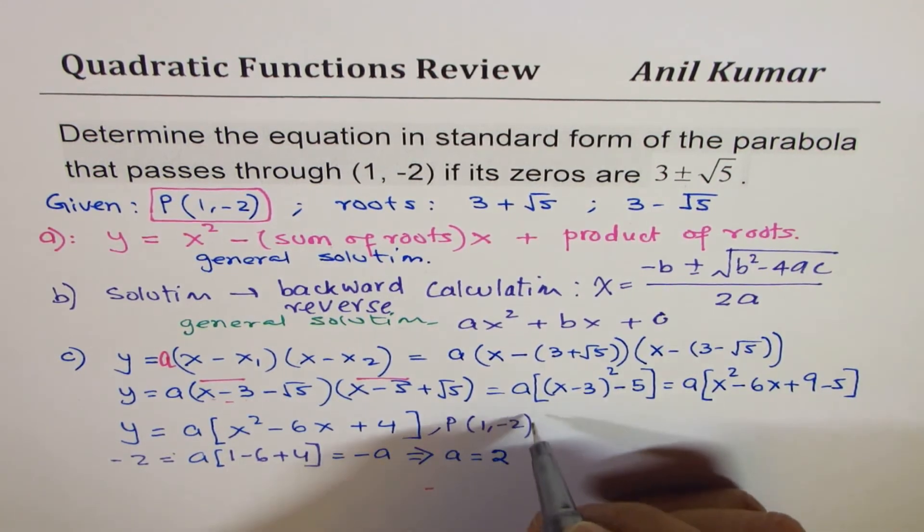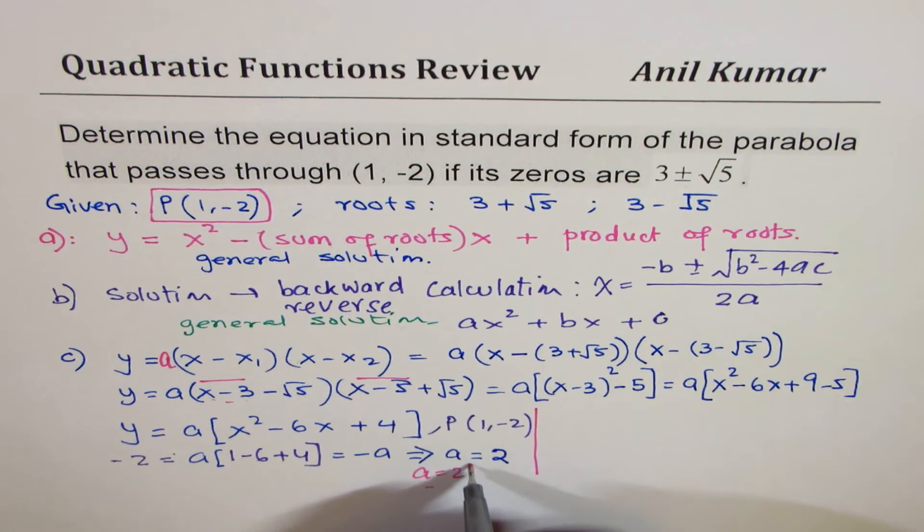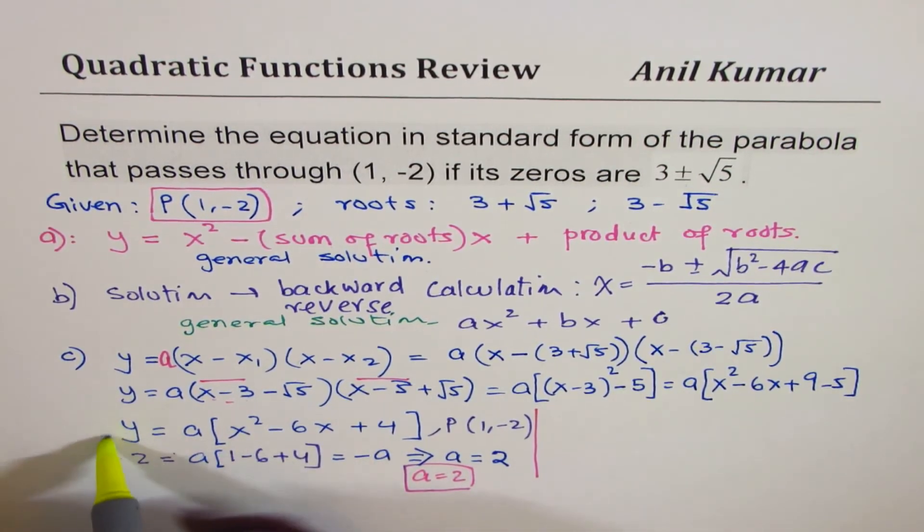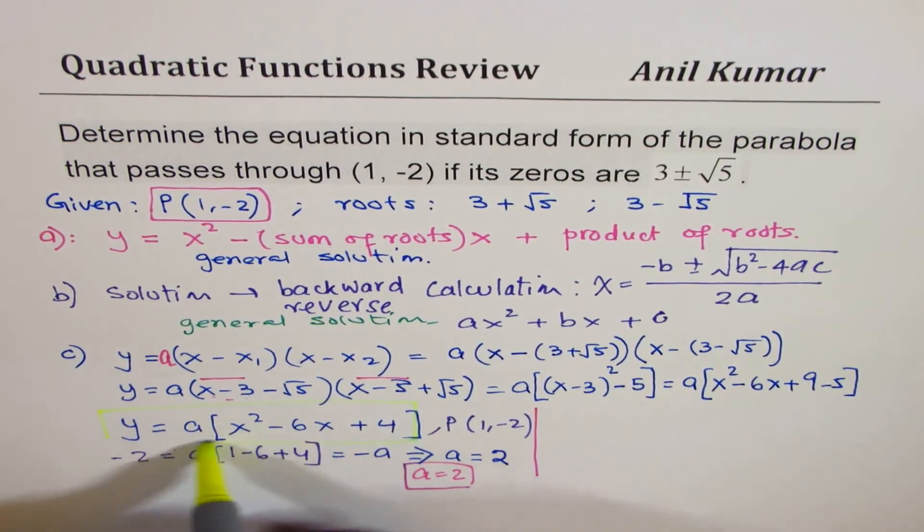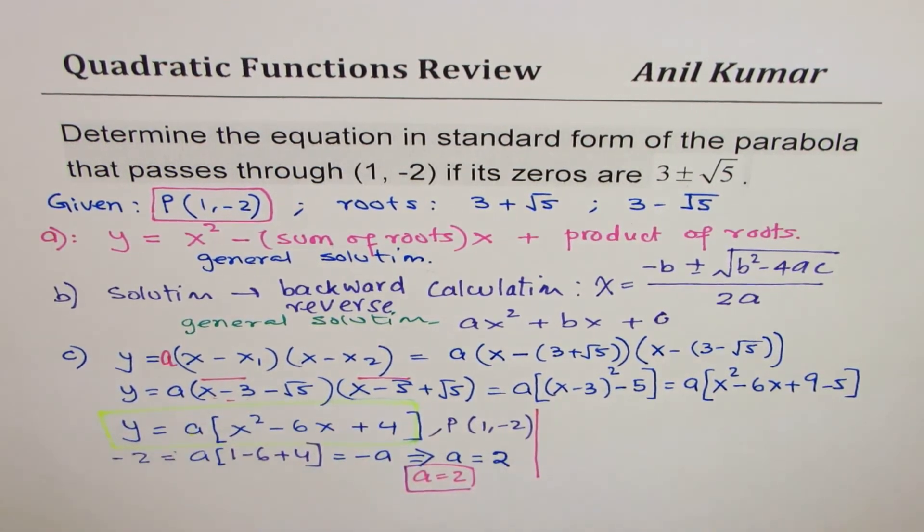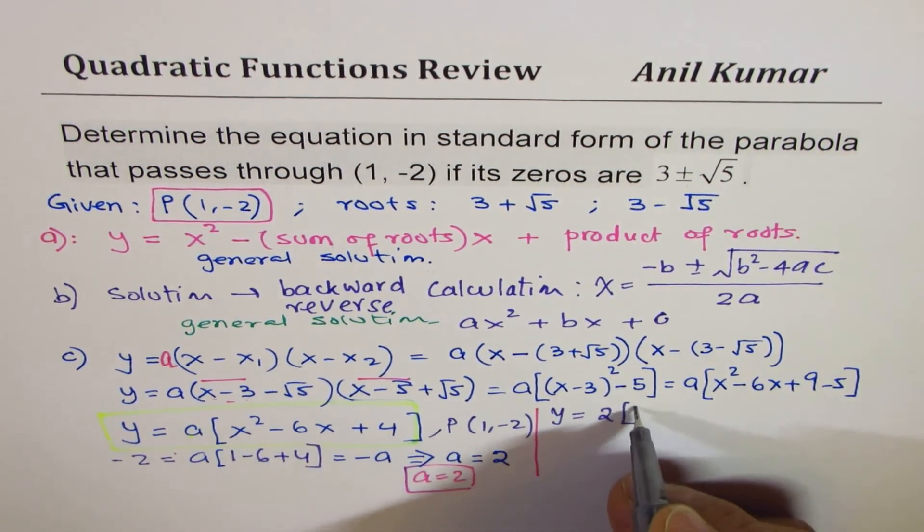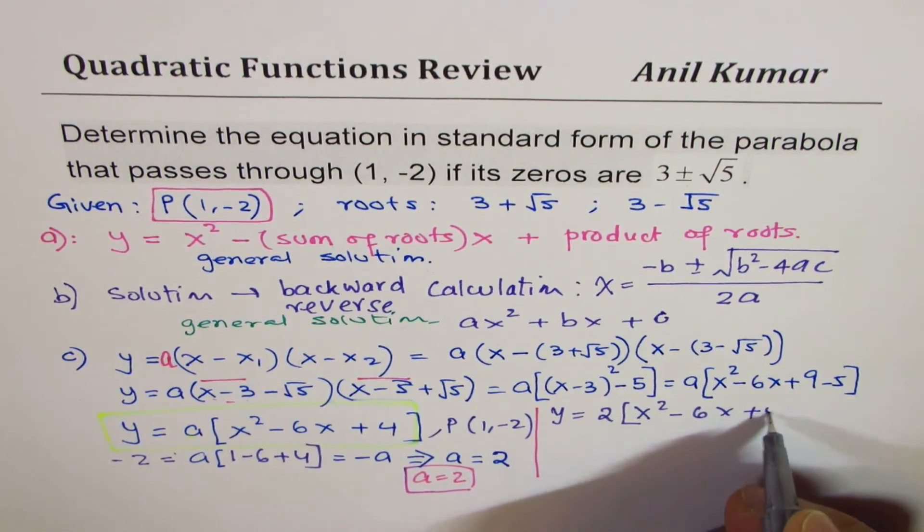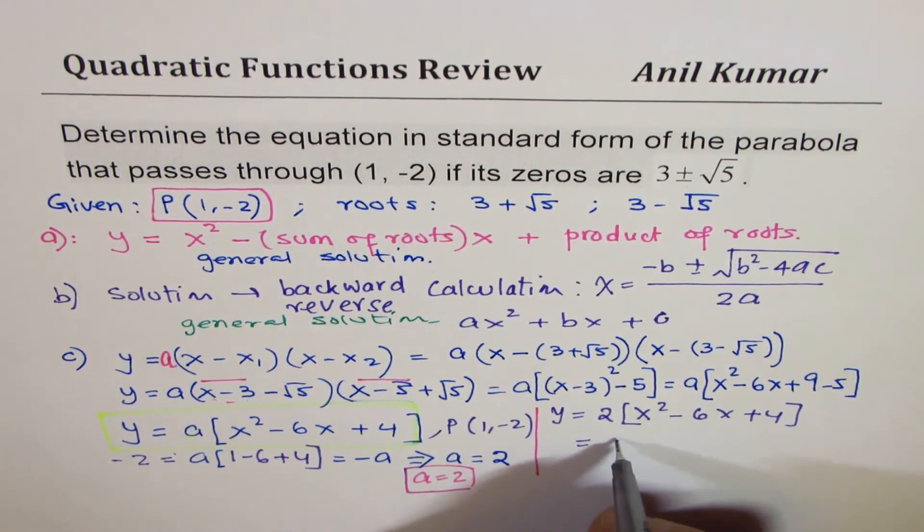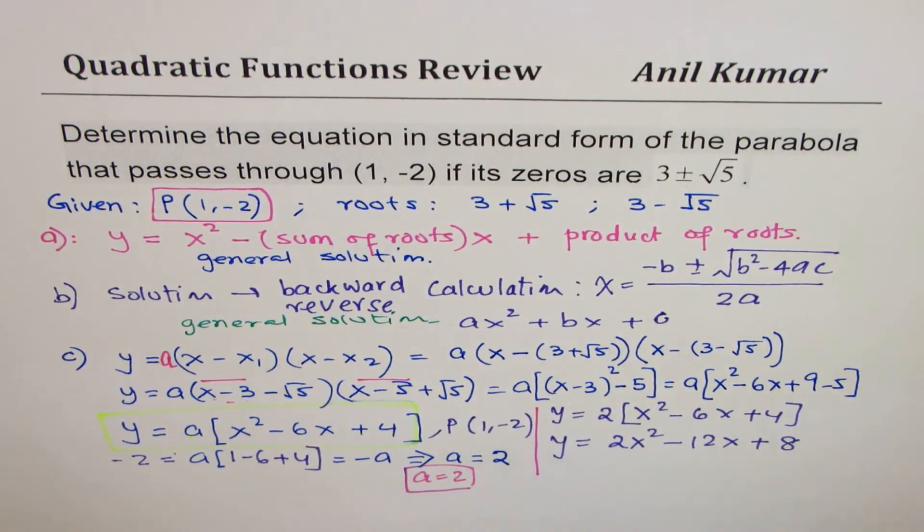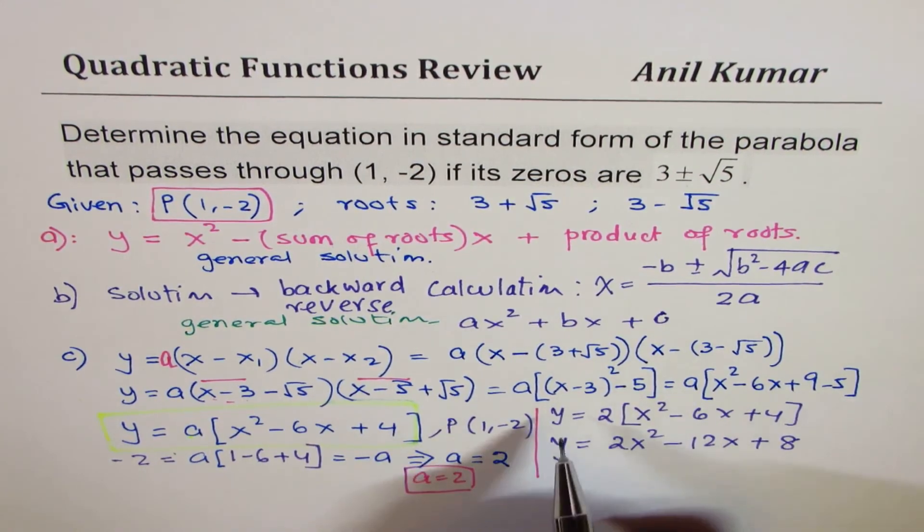Can you write down the answer now? To write down the answer we'll use this equation. We have a = 2, so that is to say we'll write y = 2(x² - 6x + 4), which is 2x² - 12x + 8. So that is your final answer.